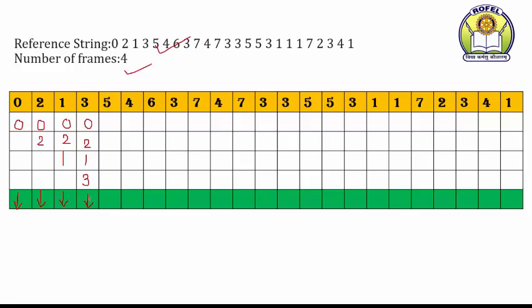Now to accommodate page number five, we have to replace these pages. Recently three use kiya hai humne, then one, two, and zero. Zero sabse pahle use kiya hai — bhoat piche hai humne usko use kar liya hai. It is not used recently, means we can replace that page. So we can replace page number zero with page number five. There is a page fault.